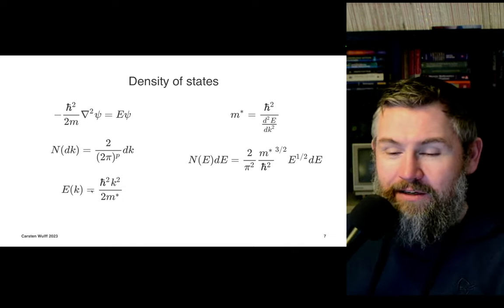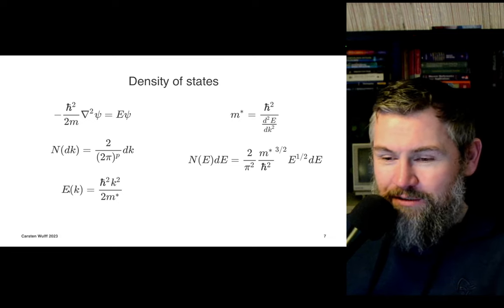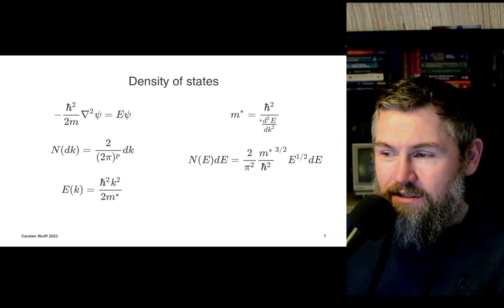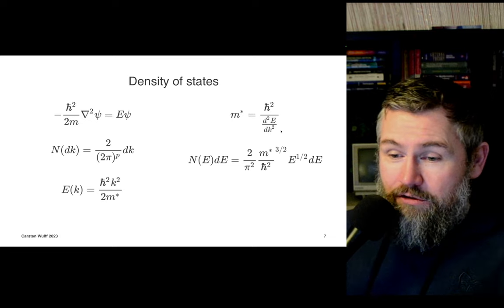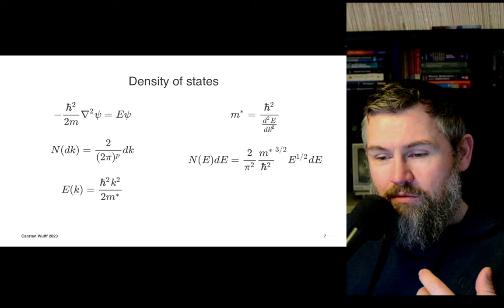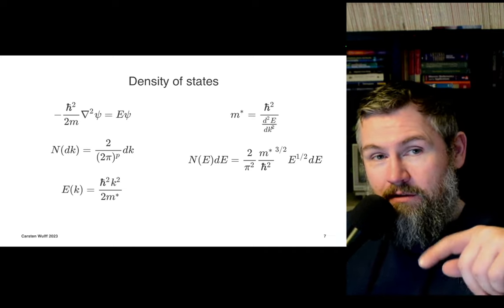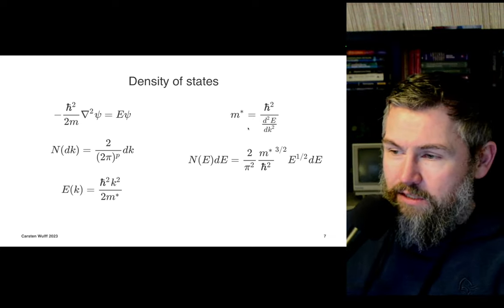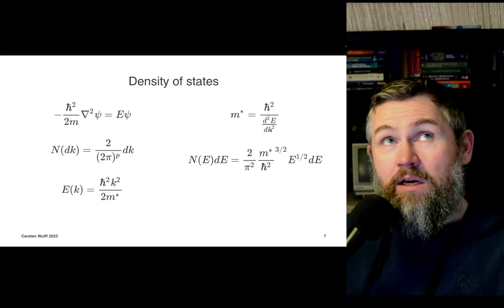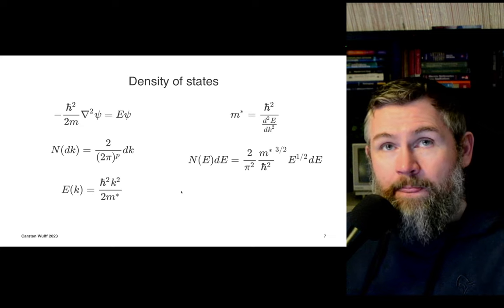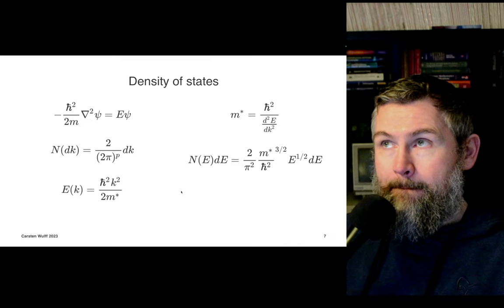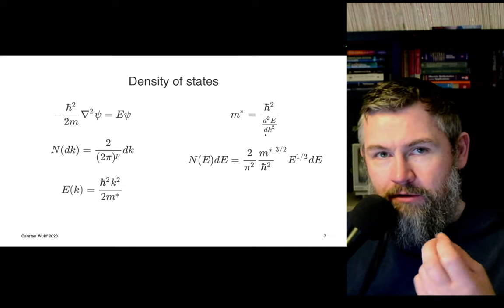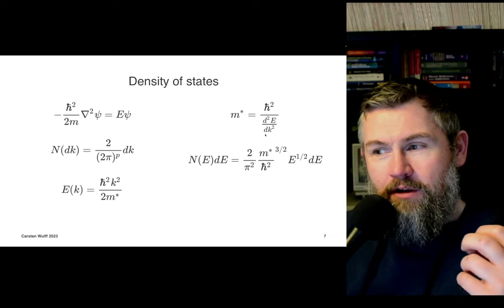When we have a function for transforming from momentum space to energy space and we have the effective mass, it turns out the effective mass used in calculating density of states is a function of the band structure. If you have momentum on the x-axis and energy on the y-axis, it typically has a parabolic shape - and the effective mass here is the second derivative, basically the curvature of the band structure. This means the effective mass also depends on direction in the unit cell.